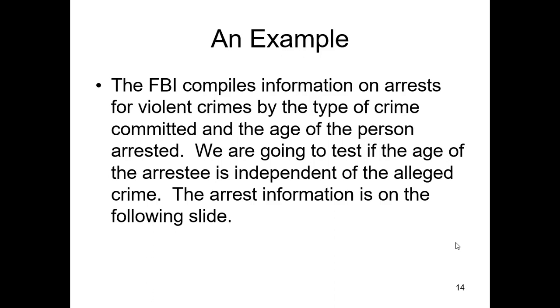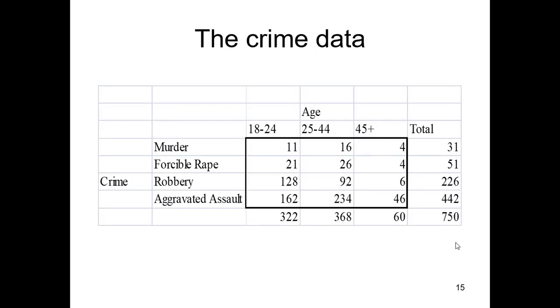Very, very simple thing. So I'll get you started on a couple of examples. The FBI compiles information on arrests for violent crimes by the type of crime committed and the age of the person arrested. We're going to test to see if age of the arrestee is independent of the alleged crime. The arrest information is on the following slide and what do we see? We see murder, forcible rape, robbery, aggravated assault and then a few age categories. Look at that, murder 18 to 24 year olds, 11 murders, 25 to 44, as you get older you kill more, what the hell's with that?